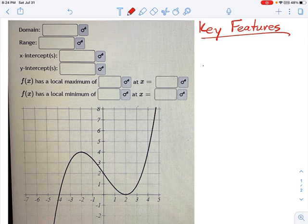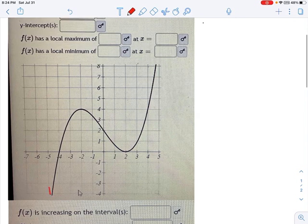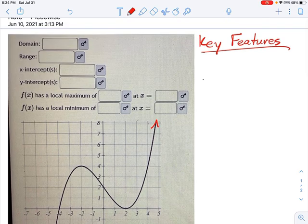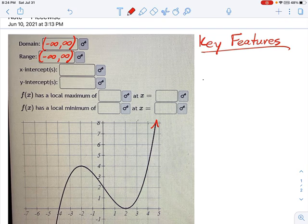Domain is asking for all the x values, and since this function goes to infinity in each direction, it has all the x values. There's no interruptions, there's no holes in the function, there's no gaps, so it's just all the x values, and likewise for the y values.